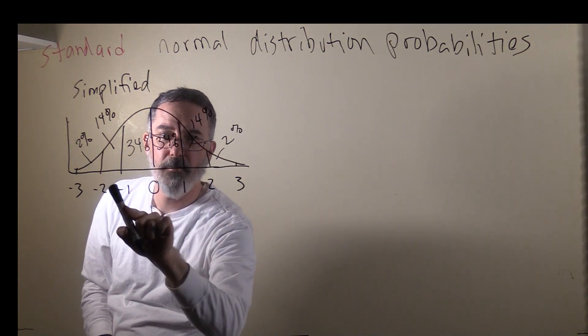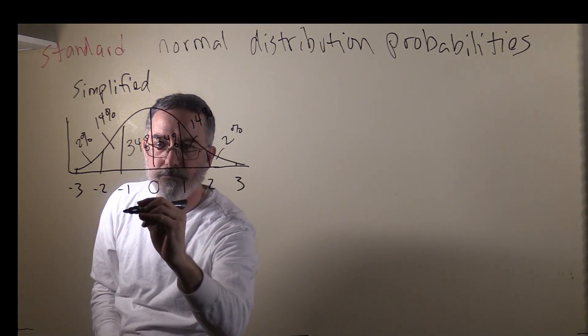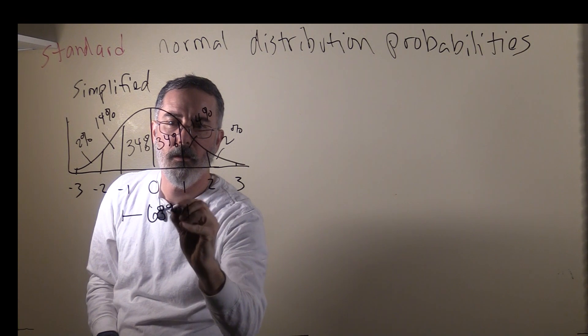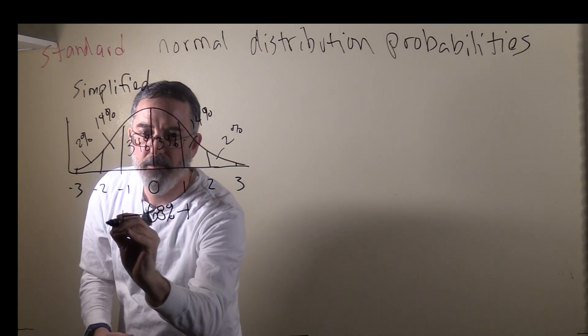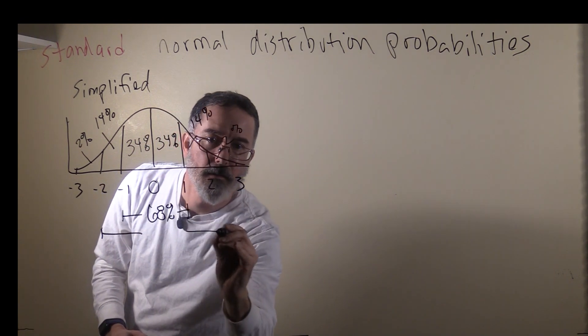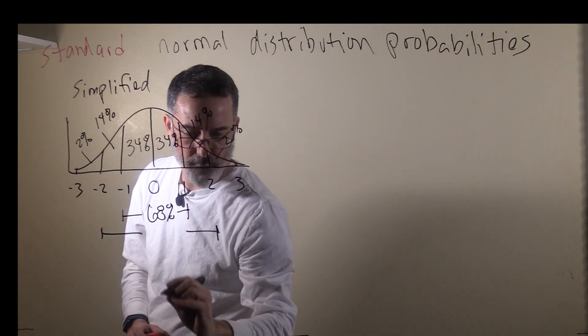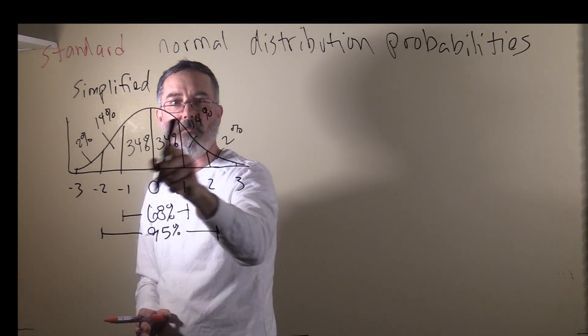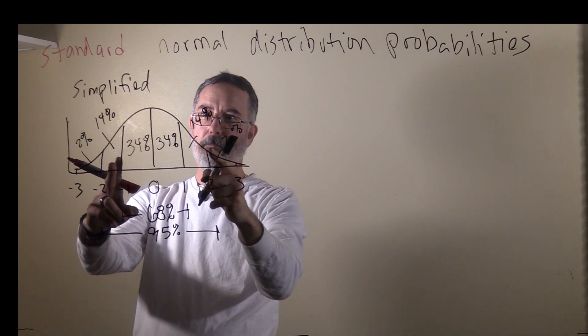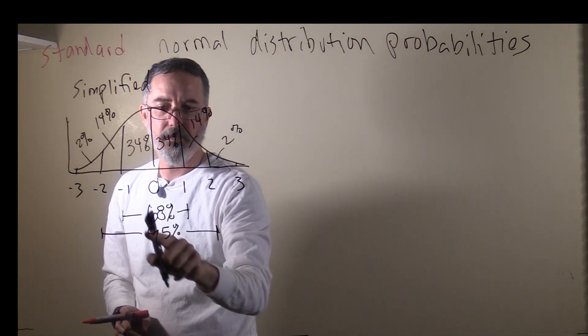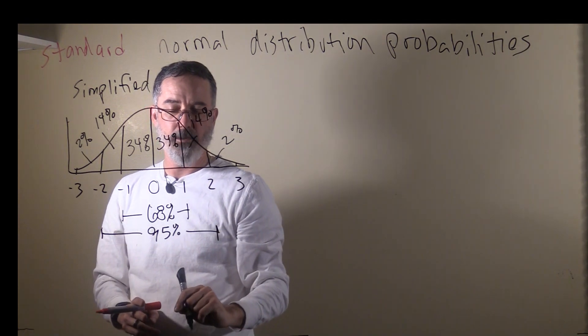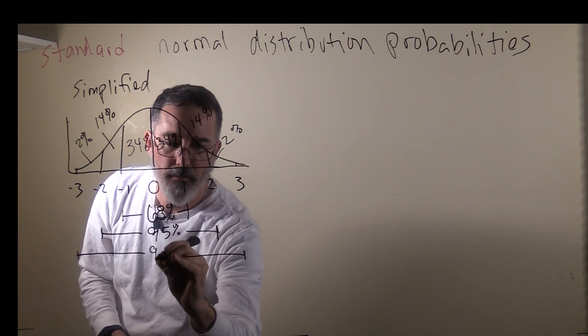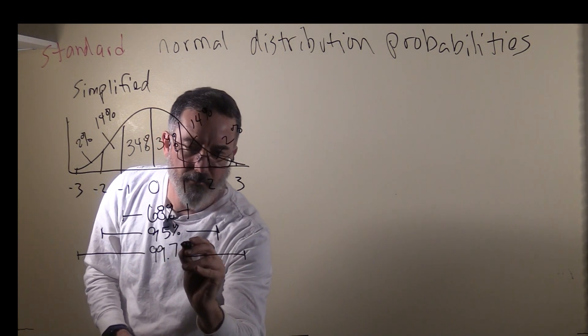Another way to think about this is that in between negative one and one, there's 68% of the whole area. If you go out to negative two to two, we're up to 95%. That's not exactly what this math adds up to here. It would have been 96%, but this is a slightly different way of calculating it that's a little bit more accurate. If we go all the way out to three standard deviations, it's 99.7%.